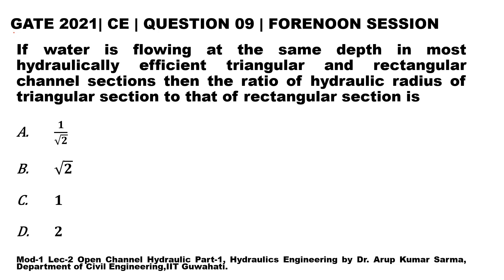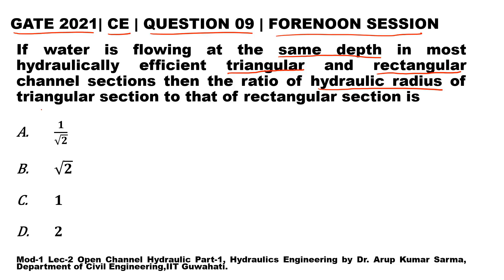Hello students, let's see another question which came in GATE 2021 Civil Engineering — this was question number 9 in the forenoon session. The question states that if water is flowing at the same depth in the most hydraulically efficient triangular and rectangular channel sections, then the ratio of hydraulic radius of the triangular section to that of the rectangular section is asked, with four options given.